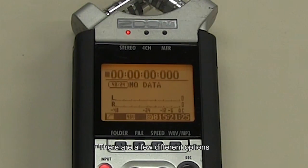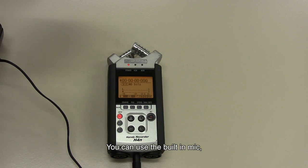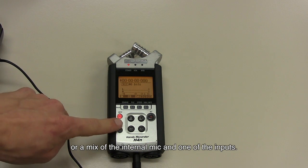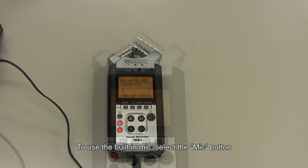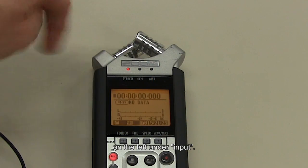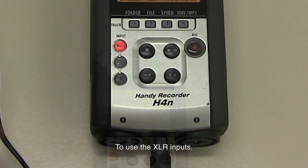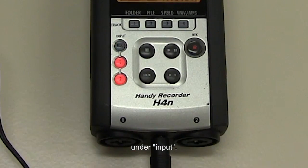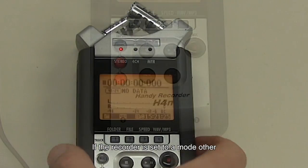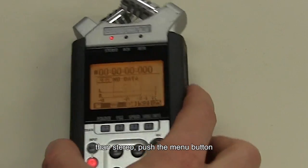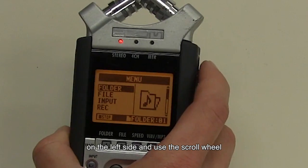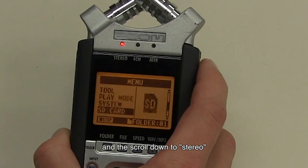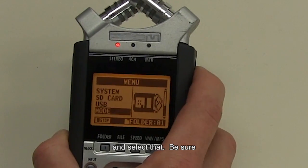There are a few different options to record audio. You can use the built-in mics, the two inputs on the bottom, or a mix of the internal mic and one of the inputs. To use the built-in mic, select the mic button on the left under input. To use the XLR input, select the one and two under input. If the recorder is set to a mode other than stereo, push the menu button on the side and use the scroll wheel to scroll down to mode. Select mode by pushing in on the scroll wheel, then scroll down to stereo and select that.